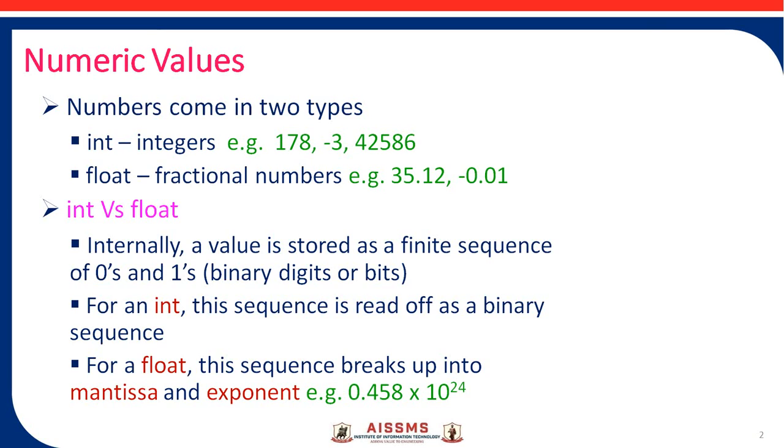Integers are numbers that do not have any decimal point. Fractional numbers, or floats, have a decimal point.